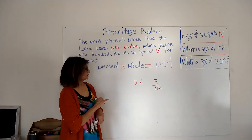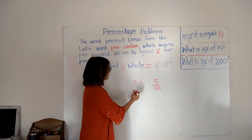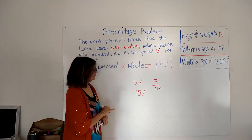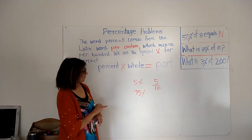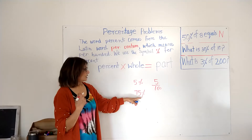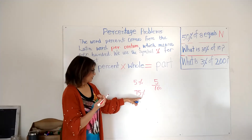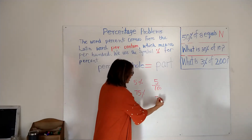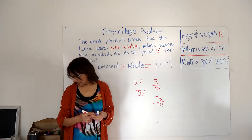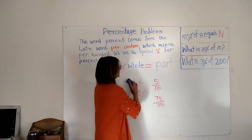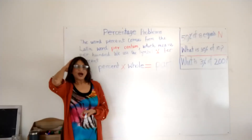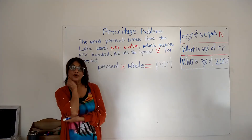Let's take another number: 75 percent. When you see this percent sign behind a number, it means that number is out of one hundred. So 75 is out of 100. Let's get started solving percentage problems.